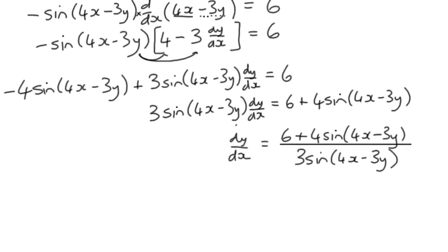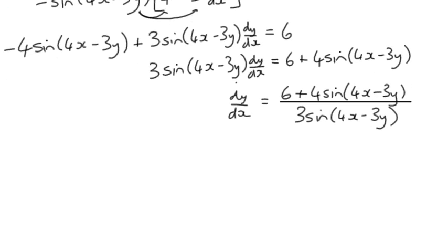Okay, so that gives us our derivative of the original function. And that's how we differentiate a trig term of an implicit function.